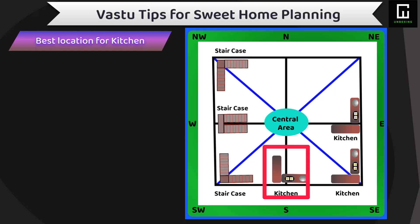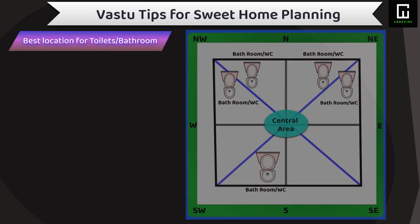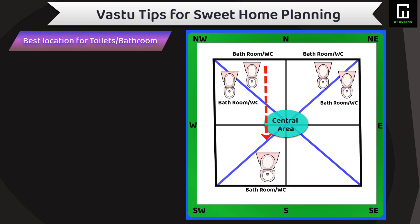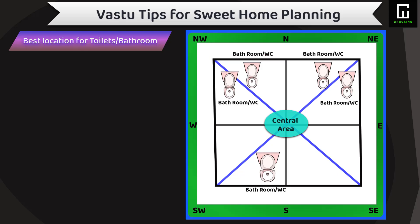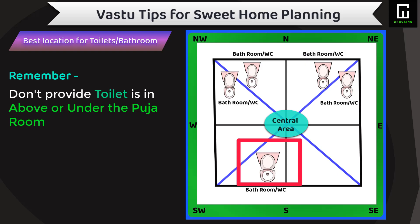The water closet or commode should preferentially be aligned to the north-south axis in the toilet. You can build toilets in the west or northwest side of a room, depending upon whether the toilet is in the bedroom or separate. Toilets can also be constructed on the southeast side. Remember, do not provide a water closet in the toilet above or under a puja room, fireplace, or bed. Avoid toilets in the center of the plot. Northeast or southwest corners of the home can also be used for a toilet when there is no scope in any other direction.